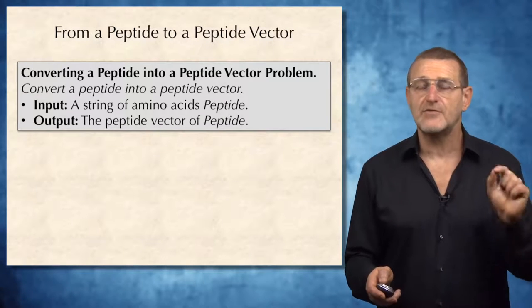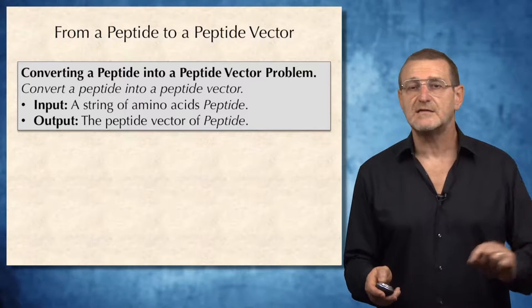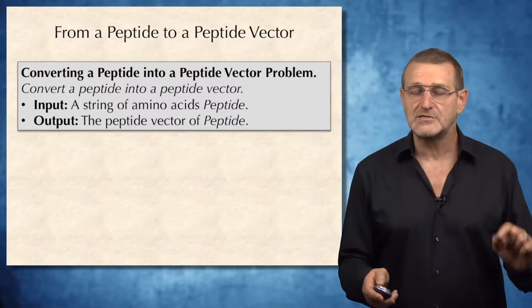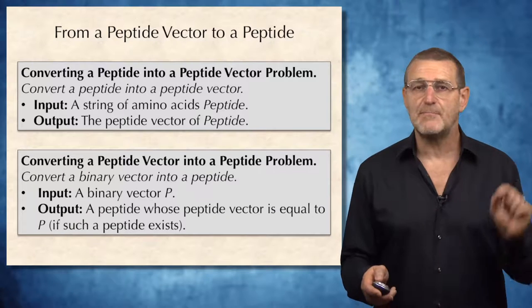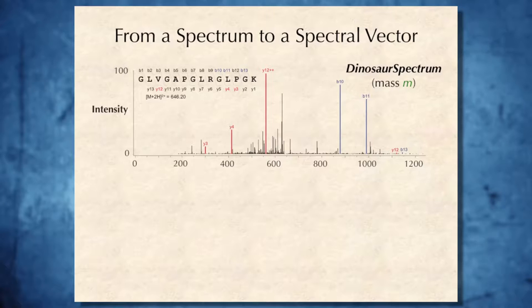You can easily solve the following problem: Given a peptide, convert it into a peptide vector. And it is clear that we can also solve a reverse problem. Given a peptide vector, transform it into a peptide. We will now turn to a more difficult problem of converting a spectrum into a spectral vector.